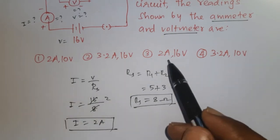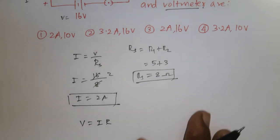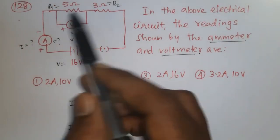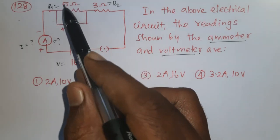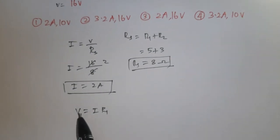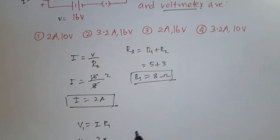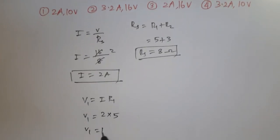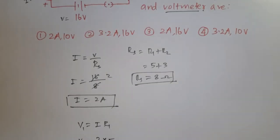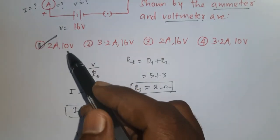Now find the voltmeter reading across the 5 ohm resistor. In a series circuit, voltage differs across each resistor. V1 = I × R1 = 2 × 5 = 10 V. So ammeter reading is 2 A and voltmeter reading is 10 V. The correct option is the first one: 2 ampere and 10 volt.